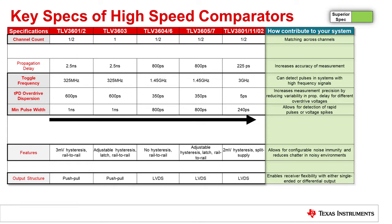When we talk about high-speed comparators, prop delay stands out as being very important. But beyond prop delay, there are a number of other specs that really make a difference — think about overdrive dispersion, minimum pulse width, and toggle frequency. We'll discuss how each of these key specs directly benefits a system.